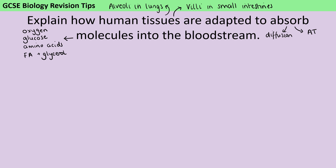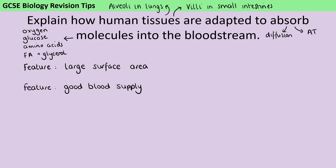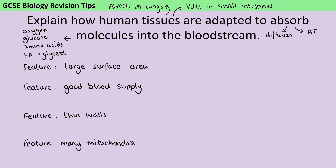To start the actual answer, I'm going to think about the features of those two tissues. Firstly, they both have a large surface area. Secondly, they both have a good blood supply. Thirdly, they have thin walls. And lastly, the villi in the small intestine have many mitochondria.